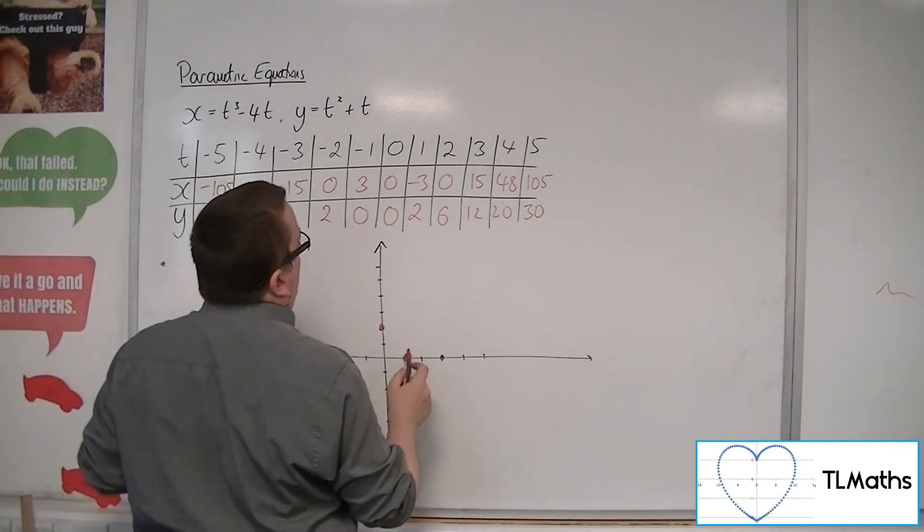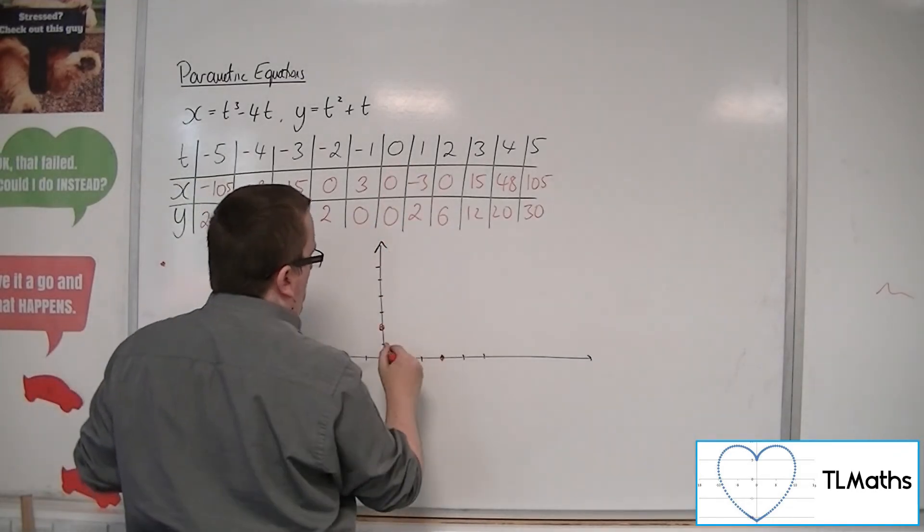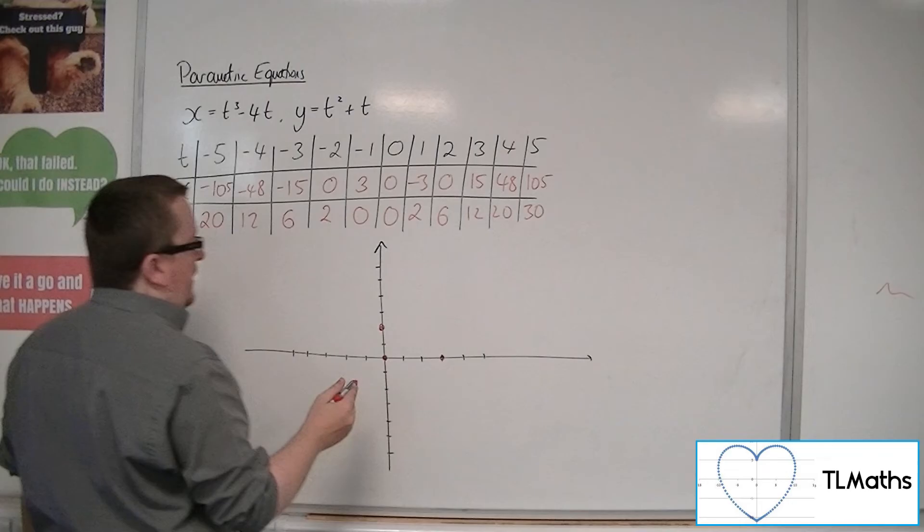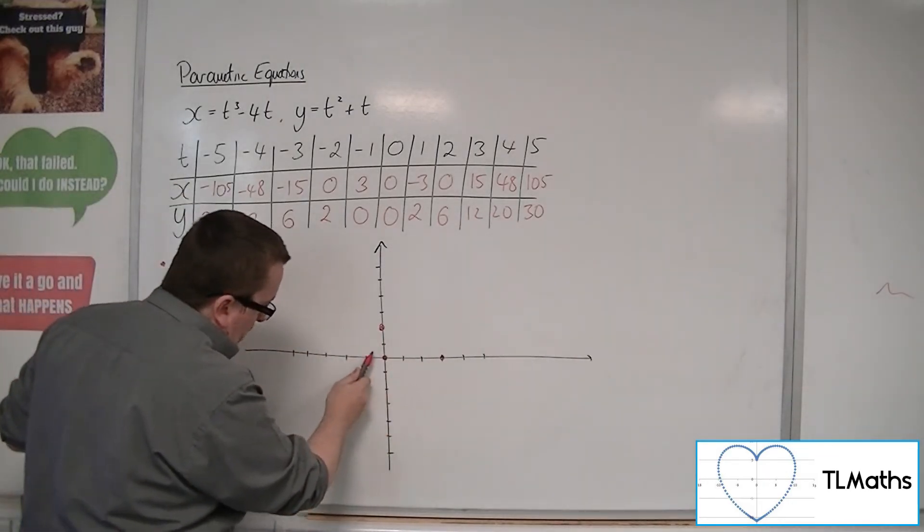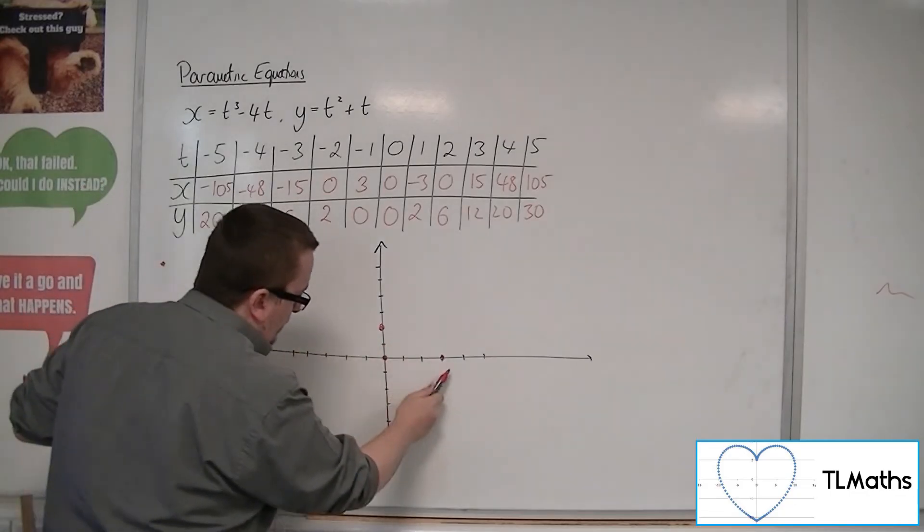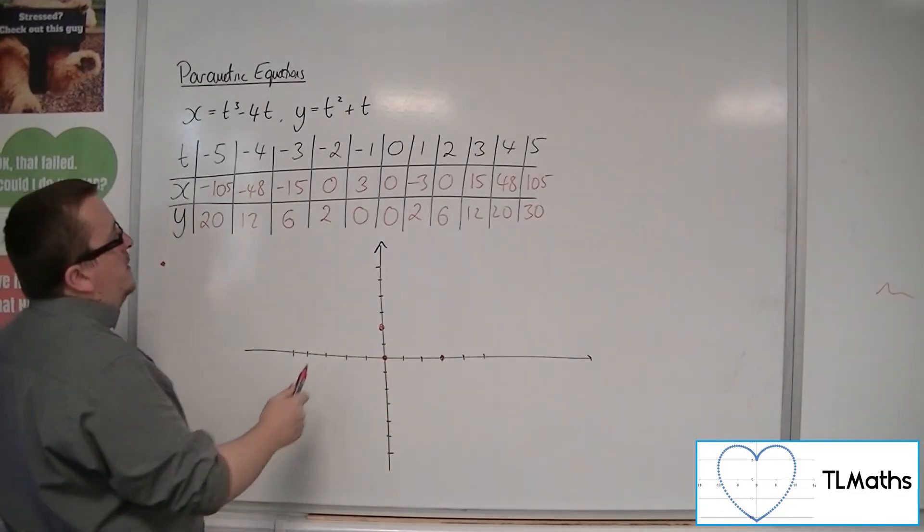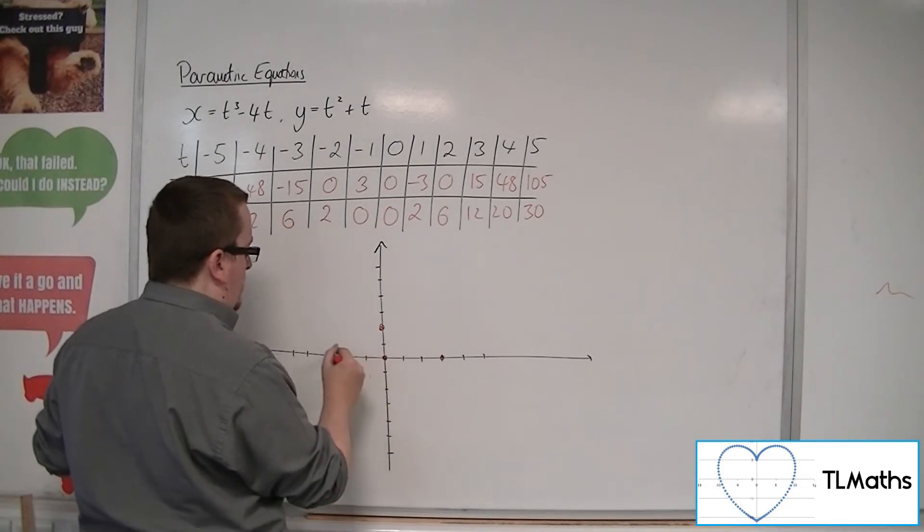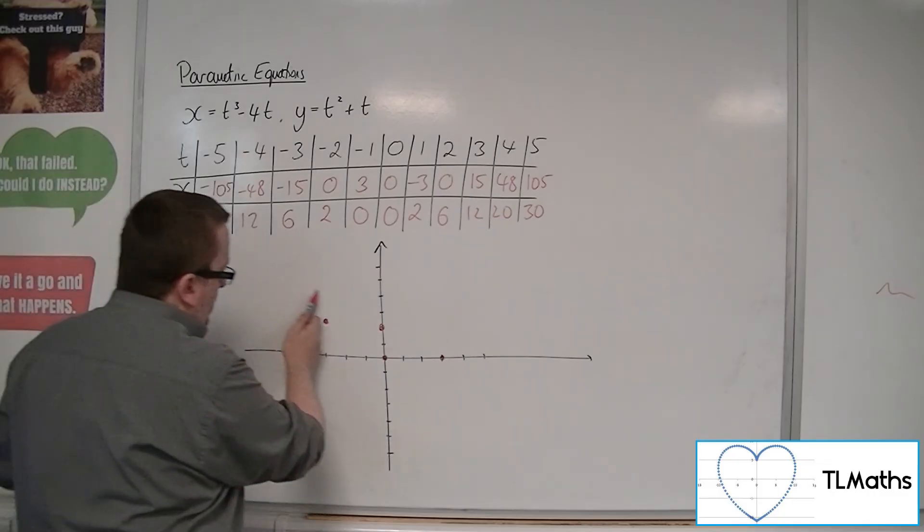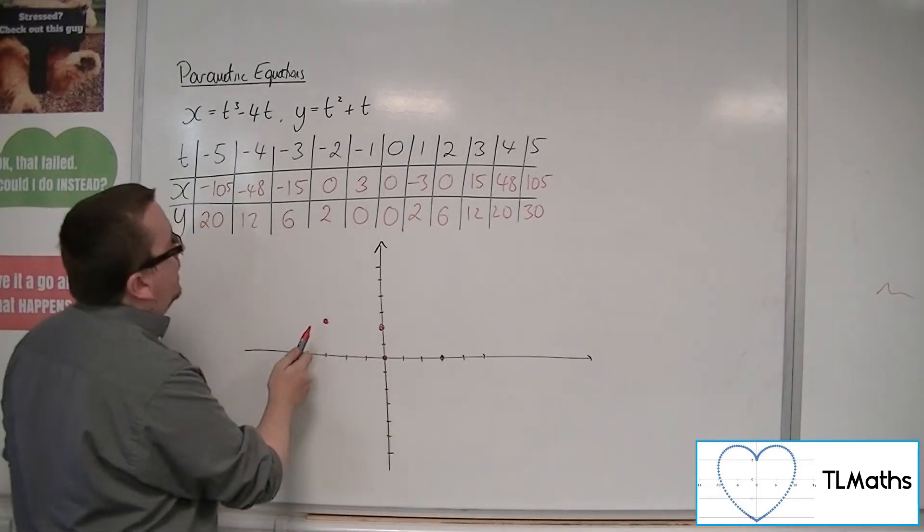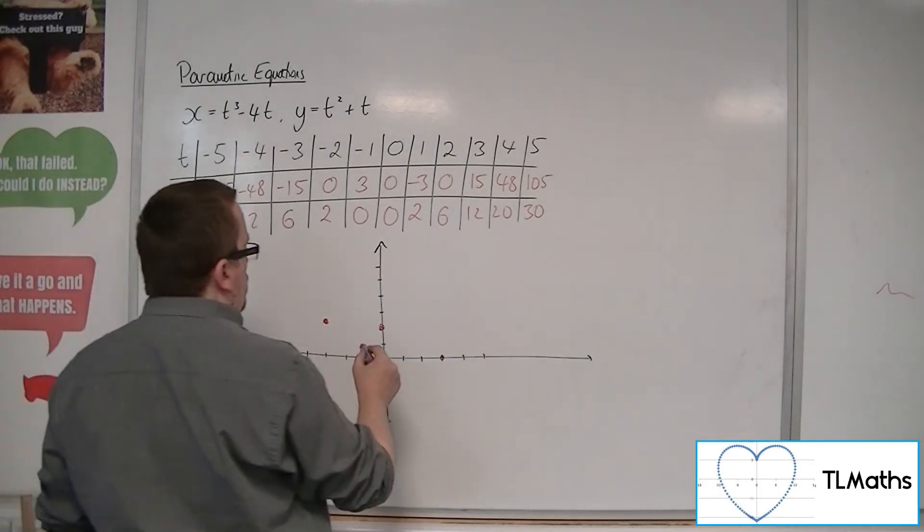Then we're at 0, 0. Now that's a bit strange. So what's happened is that it's come round and must sweep back round. Then we're at minus 3, 2. So minus 3, 2, somewhere here. So we're going round, sweeping round like that.